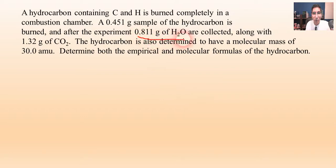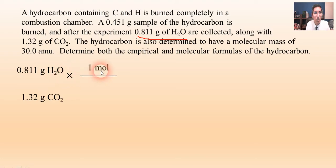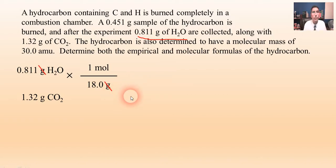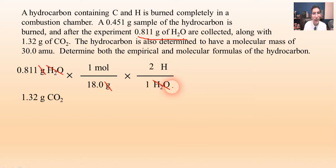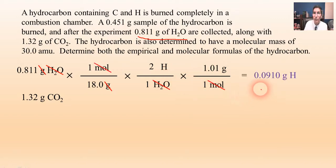We'll do the same thing as before. We have 0.811 grams of water — let's figure out how many grams of hydrogen are in that. Step one: convert to moles — 1 mole over 18 grams. Step two: mole ratio — hydrogen on top, water on bottom; 2 hydrogens for every 1 water. Step three: convert to grams using 1.01 grams per mole for hydrogen. Moles cancel, and we find the mass of hydrogen is 0.0910 grams.